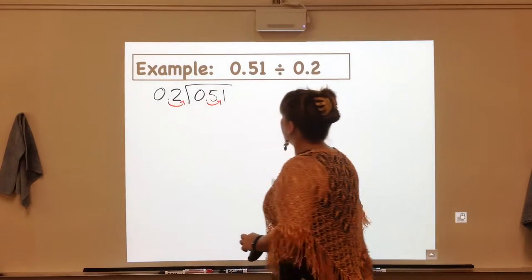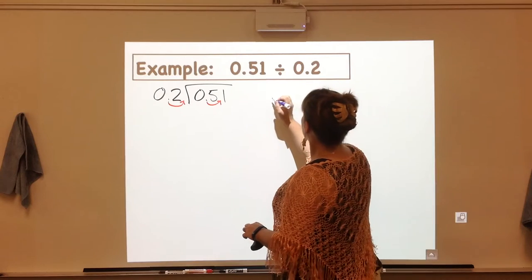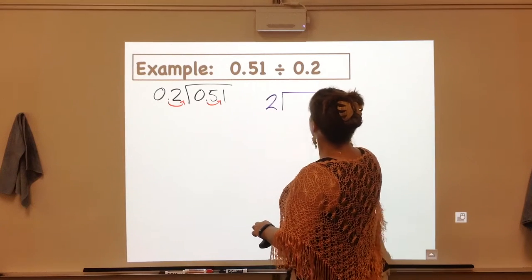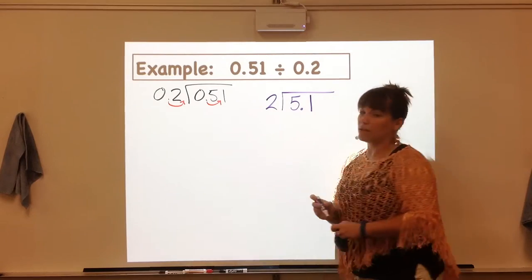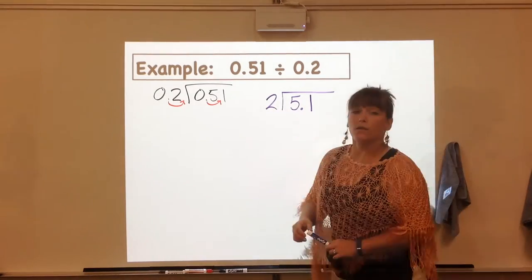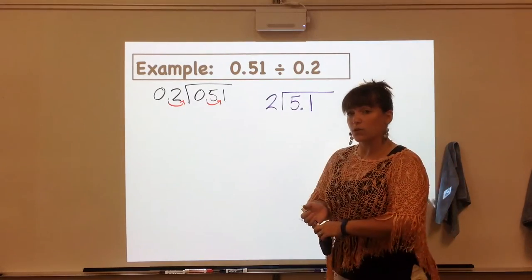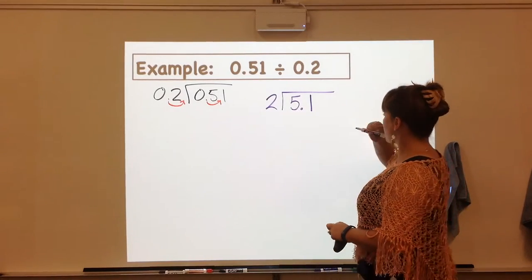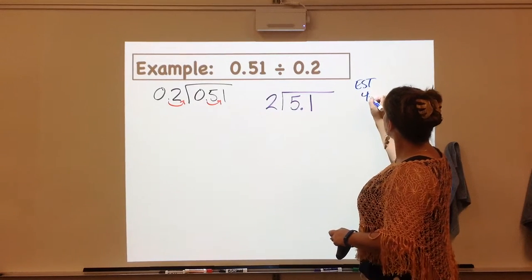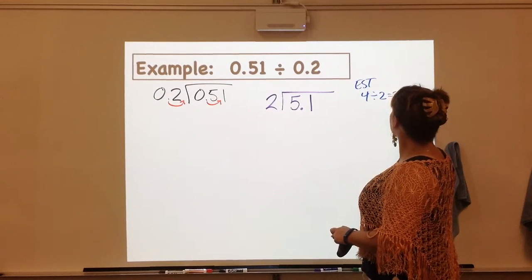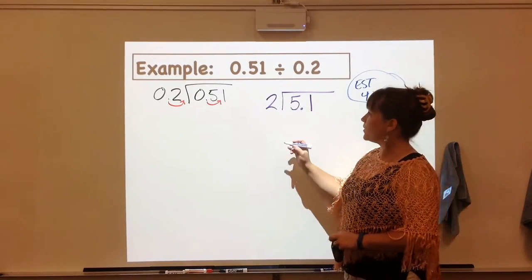Now I'm going to come over here and actually rewrite my problem. So now I have 2 as the divisor and 5.1 is my new dividend. So let's go ahead and start to divide this. Before we do we're going to estimate. I'm going to change the 5 to a 4 so that I think my answer is going to be somewhere around 2 and now we can go ahead and divide.